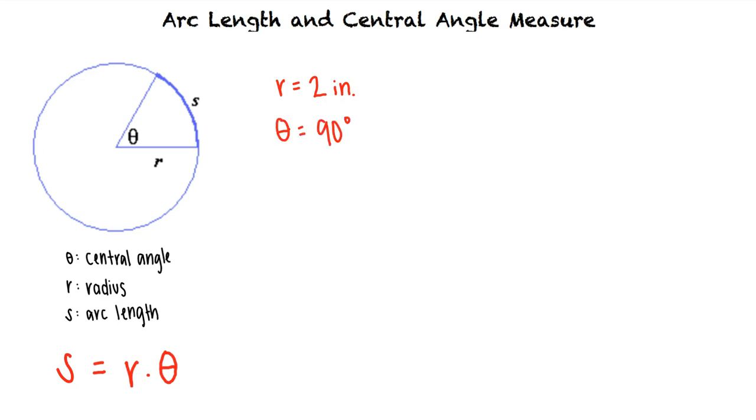So we can substitute 2 in for R and 90 in for theta, right? That's almost right. However, when using this formula, we must keep the radius in radian measure, and we can't have units of degrees. This means we'll have to convert the given angle to radian measure.